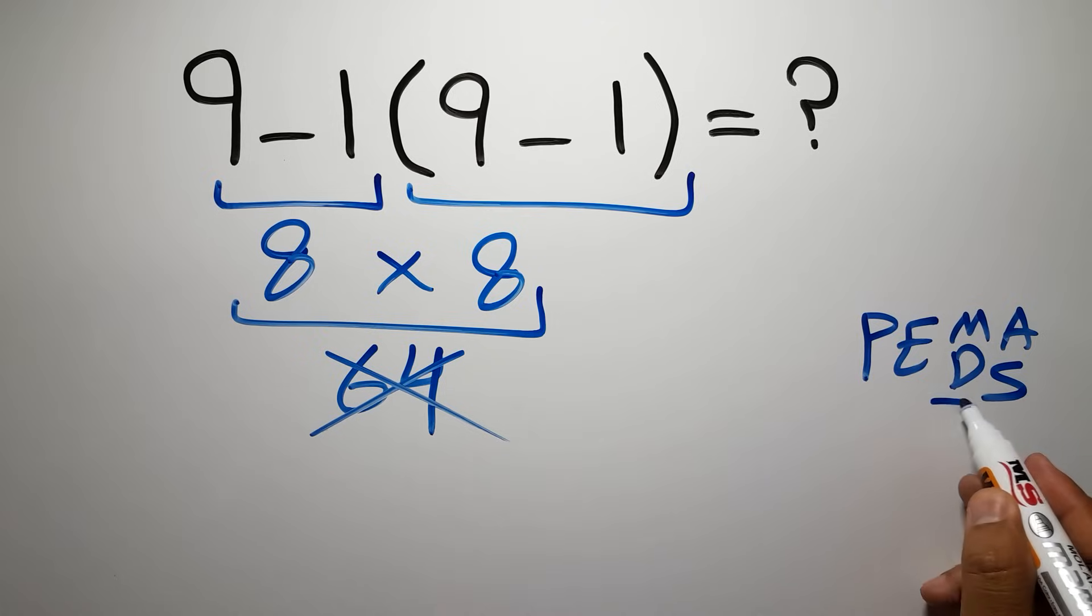Remember that multiplication and division have equal priority, and we have to work from left to right, and the same applies to addition and subtraction.